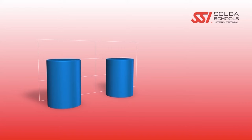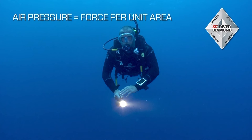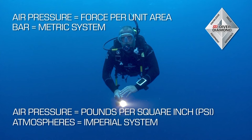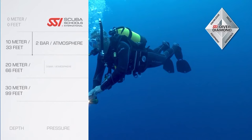A liter of seawater weighs about 1.03 kilograms, or 64 pounds per cubic foot. Fresh water weighs 1 kilogram per liter, or 62.5 pounds per cubic foot, approximately 800 times heavier than air. Air pressure is defined as force per unit area and is commonly expressed in bar in the metric system and pounds per square inch, PSI, and atmospheres in the imperial system. For each additional 10 meters or 33 feet of descent, another bar or atmosphere of pressure is added to the pressure on your body.